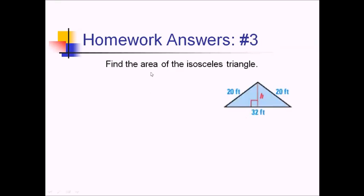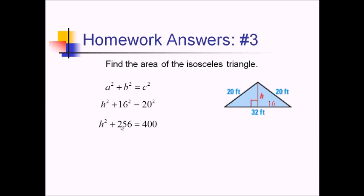For number three, we're trying to find the area of this isosceles triangle. That means we'll need one half base times height. We have the base 32 already; we still need the height. Since that's part of a right triangle, we can use Pythagorean theorem to find it. The altitude cuts this base in half, so this side is going to be 16. Using a squared plus b squared equals c squared, we can say h squared plus 16 squared equals 20 squared. That's 400 and 256; 400 minus 256 gives us 144, and the square root of that is 12.